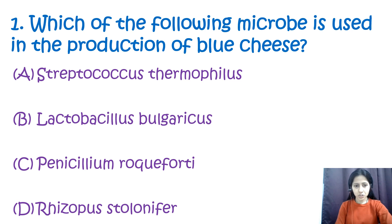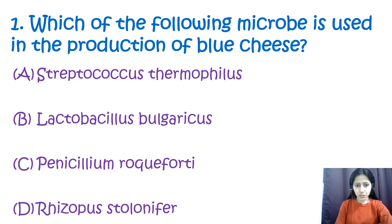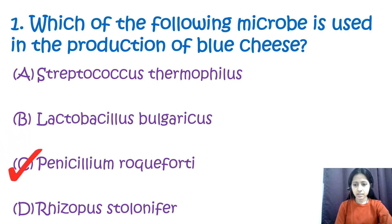Question number one: which of the following microbes is responsible for the production of blue cheese? Option A: Streptococcus thermophilus, option B: Lactobacillus bulgaricus, option C: Penicillium roqueforti, and option D: Rhizopus stolonifer. The correct answer is Penicillium roqueforti, which provides characteristic flavor and texture to blue cheese.